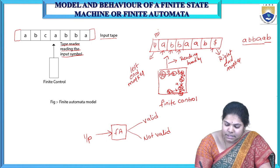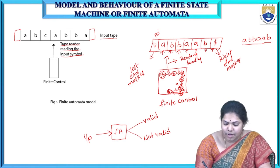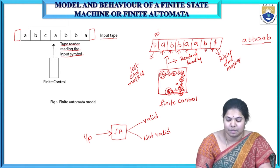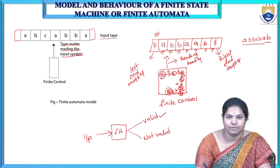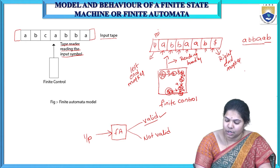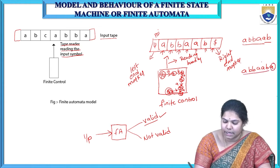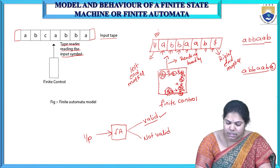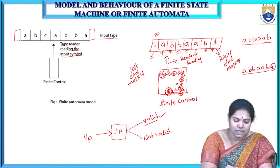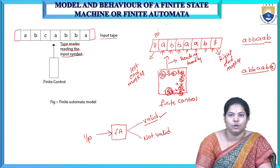Now my reading header reaches the right end marker, meaning we have read the entire string. I check whether Q6 is a final state or not. If it reaches a final state, the input string is a valid string. Otherwise, if the string does not reach the final state, it is not a valid string. For example, if I have a string A, B, B, A, A, B, A — after reading only part of it, it may not reach the required final state Q7, so that string is not valid.